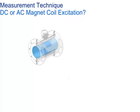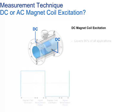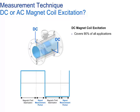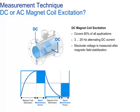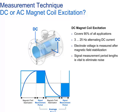There are two types of magnet coil excitation used. DC magnet coil excitation covers 90% of all applications, and AC magnet coil excitation. With DC magnet coil excitation, the coil is fed with a frequency of 3 to 30 Hz alternating DC current. After the magnetic field is stabilized, the sensor electrode voltage is measured. The signal voltages, positive and negative, are averaged to produce a flow signal. The electrode signal measurement period length is chosen specifically to eliminate noise from the AC mains line voltage.